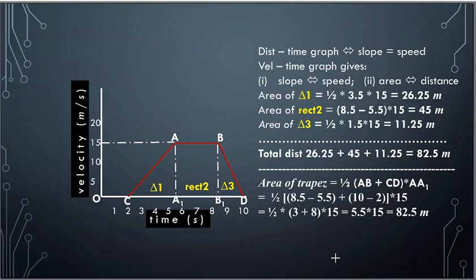This next concept applies only to the velocity-time graph — do not apply it to the distance-time graph. For the distance-time graph, you only have slope. But for the velocity-time graph, in addition to slope giving you acceleration, you also have the area of the figure. The area of the figure in a velocity-time graph gives you distance or displacement.